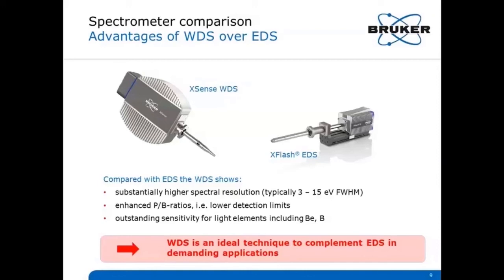And third, this is a special property of the parallel beam spectrometer with the grazing incidence optic: outstanding light element sensitivity. With these properties, a WDS can be an ideal complement to an EDS system in demanding applications where EDS peak overlaps are an issue, when trace element or light element detection capabilities play an important role, or for low kV applications if high spatial resolutions are desired.